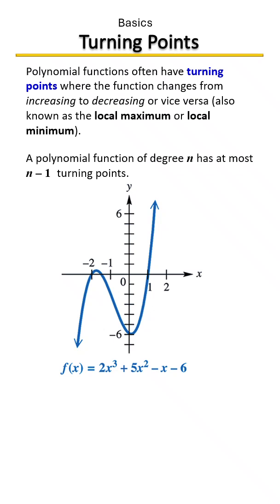Polynomial functions often have turning points where the function changes from increasing to decreasing or vice versa, also known as the local maximum or local minimum. A polynomial function of degree n has at most n minus one turning points.